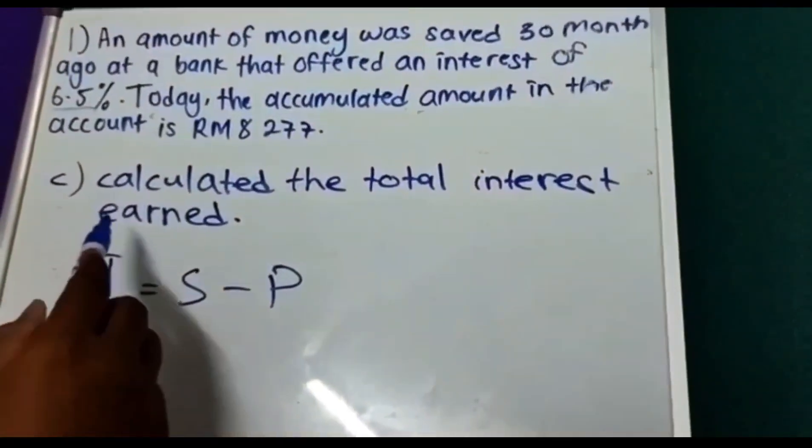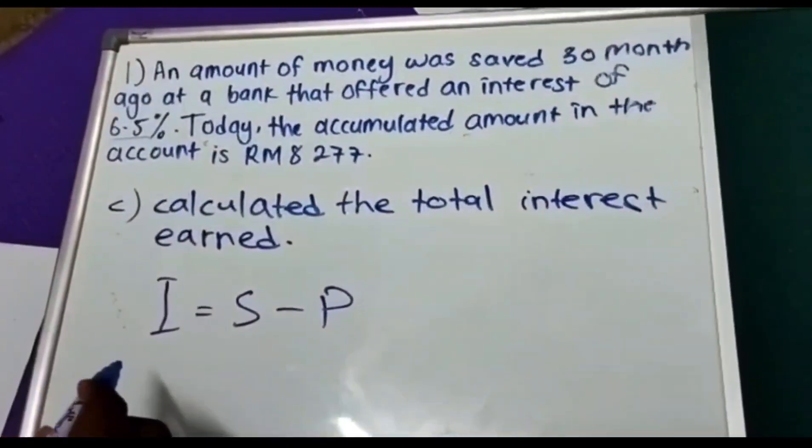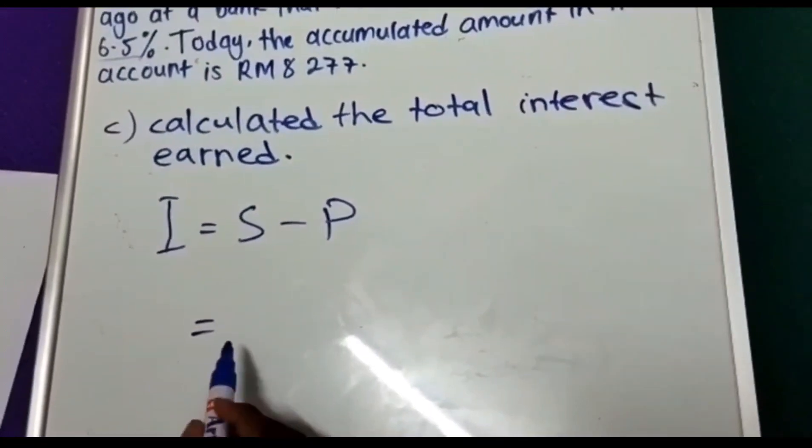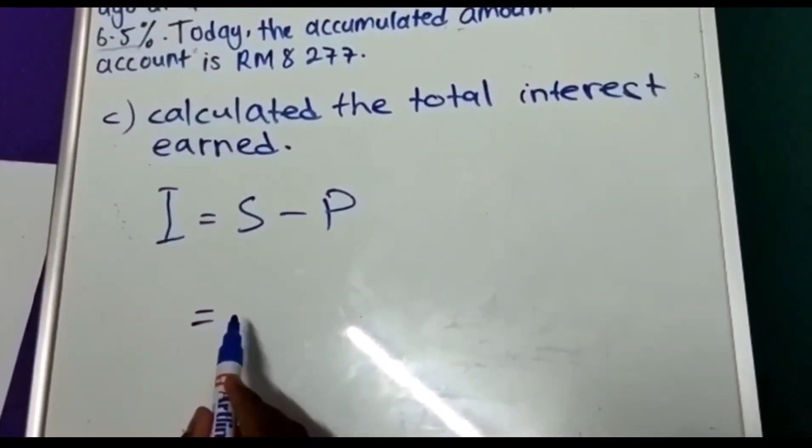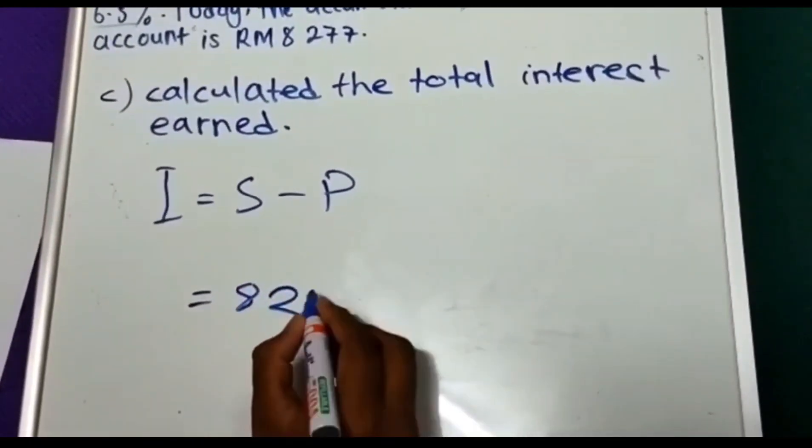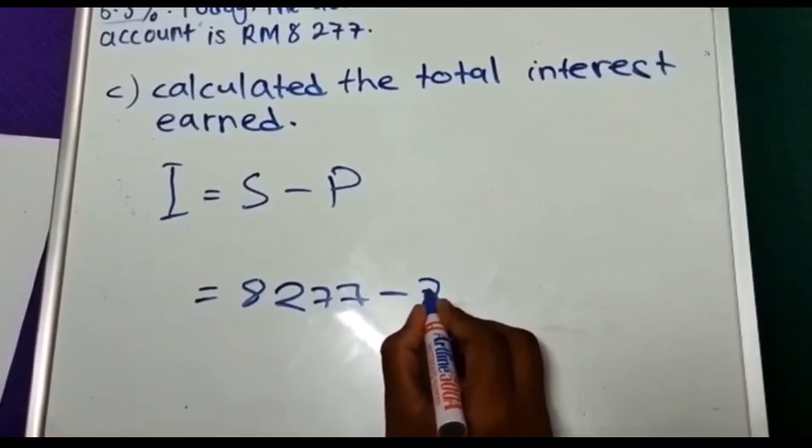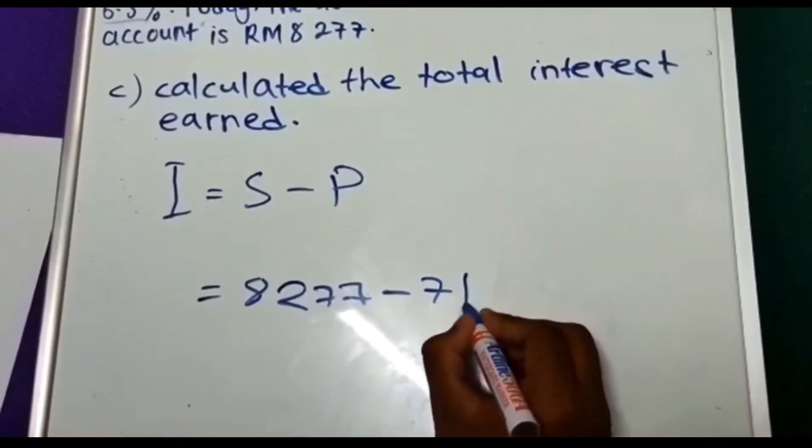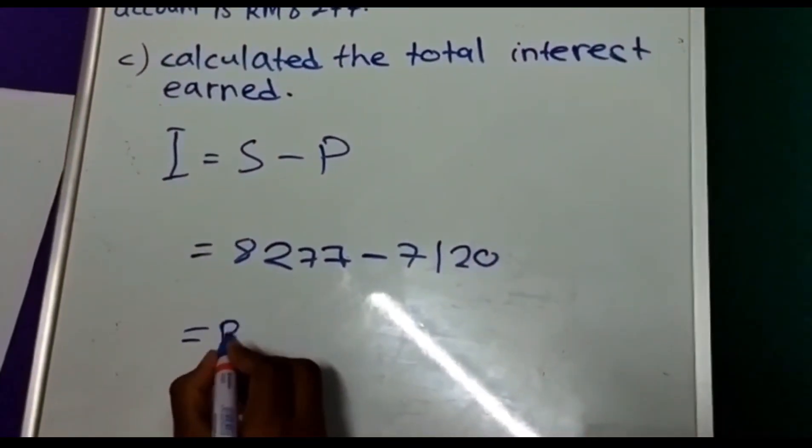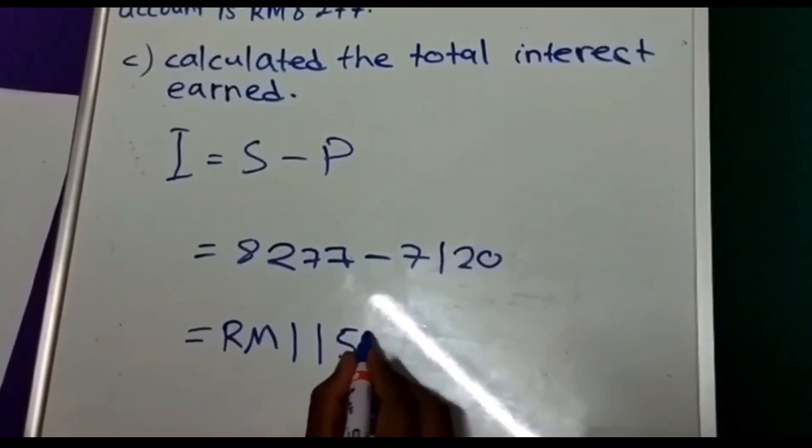Question C is calculate the total interest earned. The formula of I is S minus P. The answer is RM1,157.